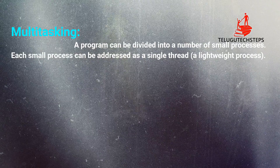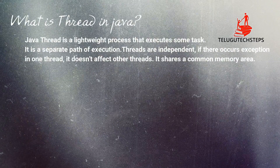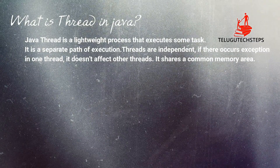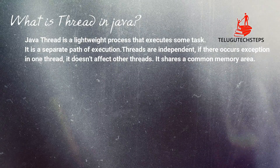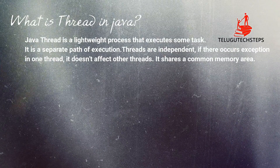What is a thread? A Java thread is a lightweight process that can execute some tasks. It is a separate path of execution. Each thread has its own independent task. If an exception occurs in one thread, it does not affect the other threads. An important point: a thread shares a common memory area.